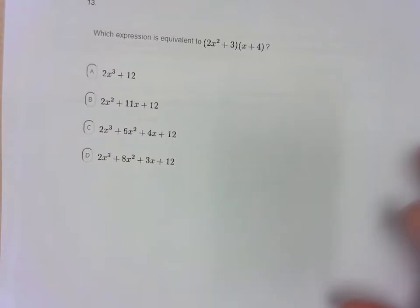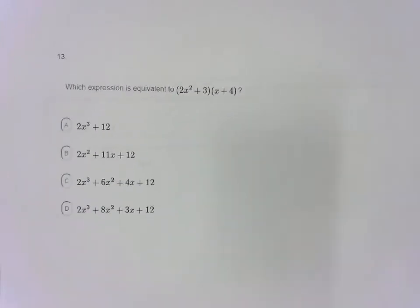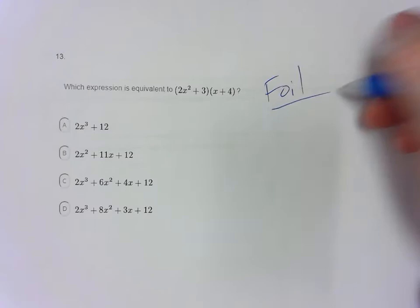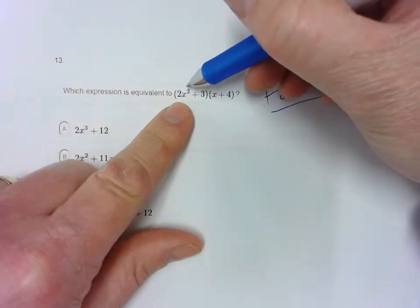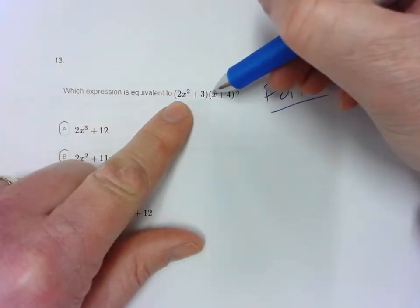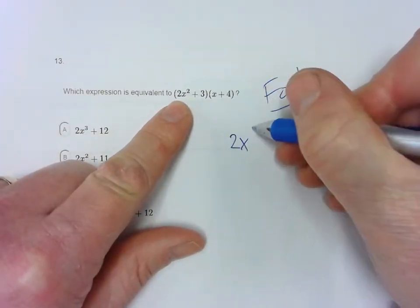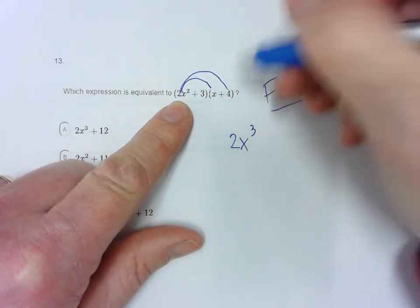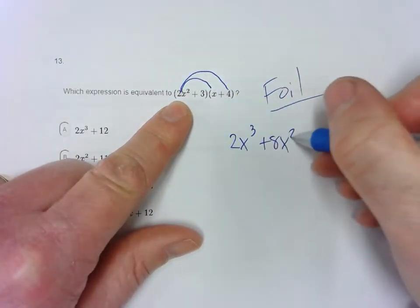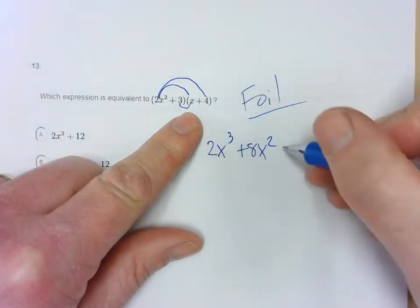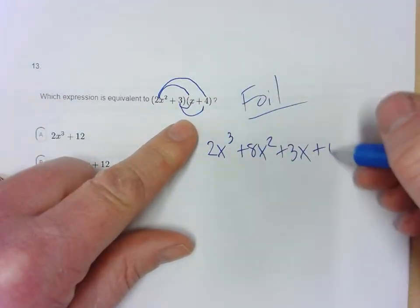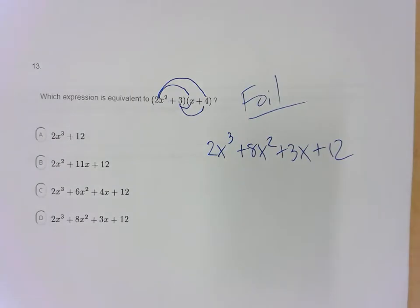Question 13: This is FOIL — First, Outside, Inside, Last. First gives 2x cubed. Outside gives 8x squared. Inside gives 3x. Last gives 12. So the answer is choice D.